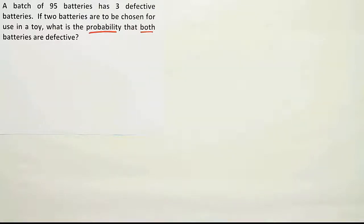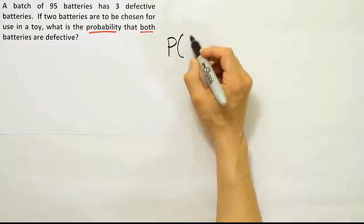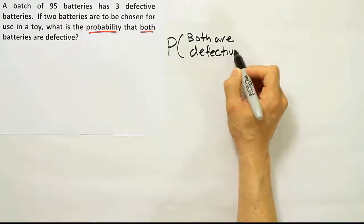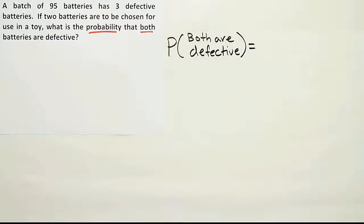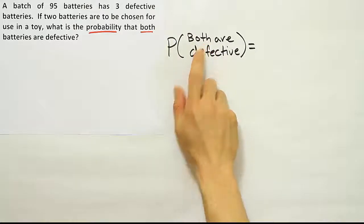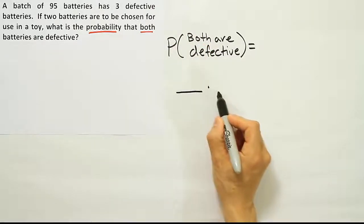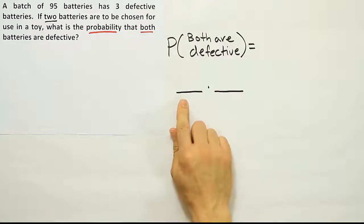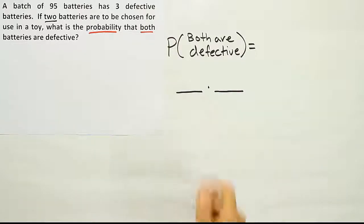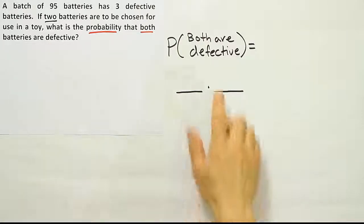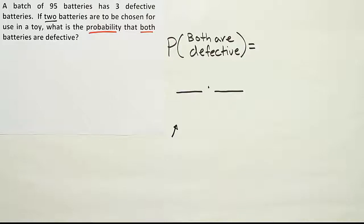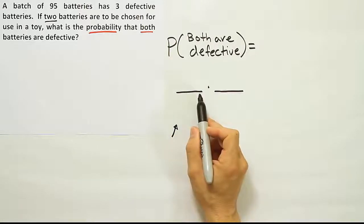We have to write a probability statement to solve the problem — the probability that both are defective. Now, the fact that both are defective means two things are being taken, so I'm going to have two probability spaces here. Remember, when it says two batteries are to be chosen for use in a toy, we have to have a space to represent each choice. Every time I go in and take a battery, I need a probability space to represent how that's going to turn out. Before I put any numbers in these spaces, I need to first know what they represent — otherwise you're likely to put the wrong numbers in the wrong place.